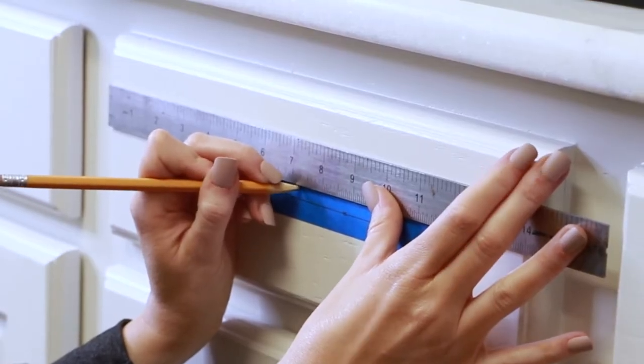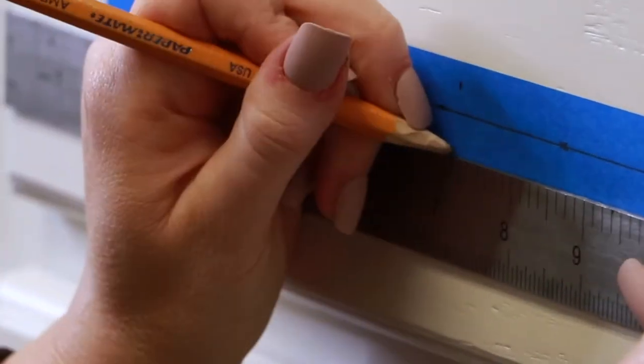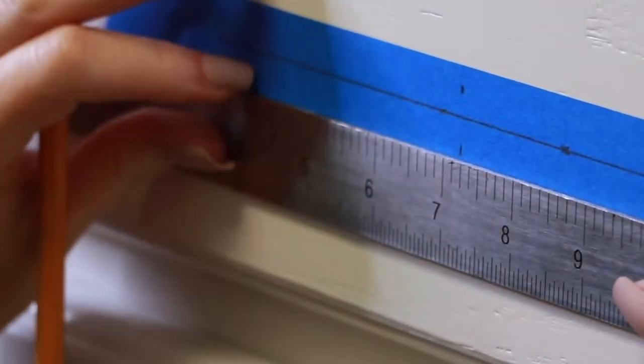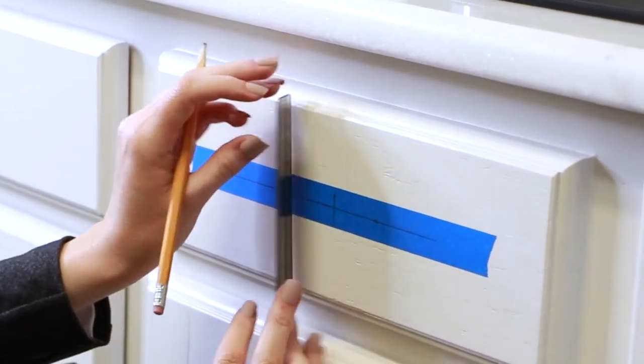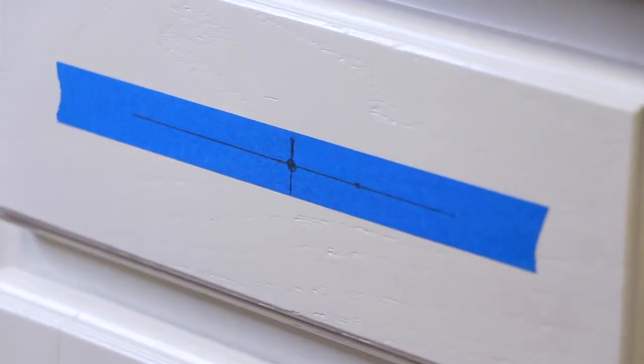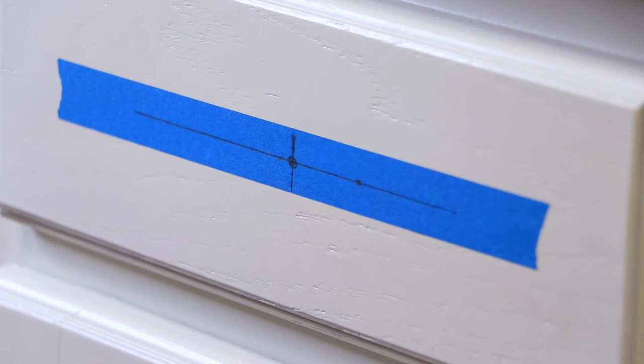Then use a ruler or tape measure to find the horizontal center of your drawer front. Mark the horizontal center on the tape. The spot where the two lines intersect is the center of the drawer, and you will align the center of your pull with that mark.